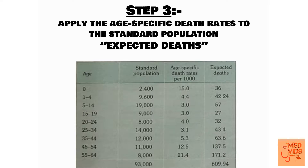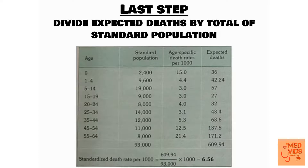The total standard population used in this process comes to 93,000. The last step is to divide the total expected deaths by the total standard population. By doing so we get the standardized death rate. If you want standardized death rate per 1,000 people, multiply by 1,000. Dividing 609.94 by 93,000 and multiplying by 1,000, you get 6.56. You have now calculated the standardized death rate for population A using direct standardization.